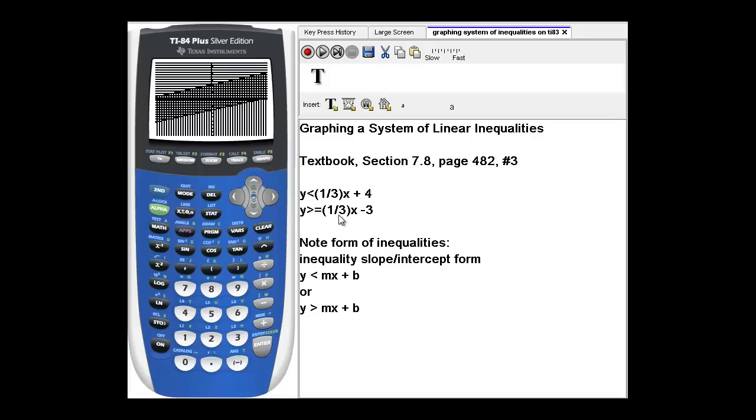Contrast that with the second inequality, y is greater than or equal to 1 third x minus 3. Since it has the equals, that implies that points along this boundary are part of the solution area. And so they are included in our solution.